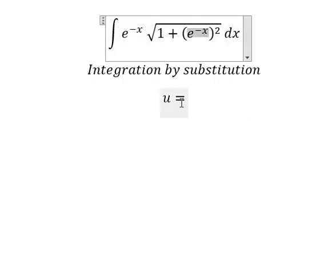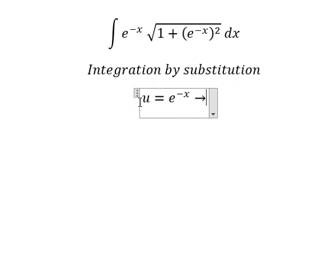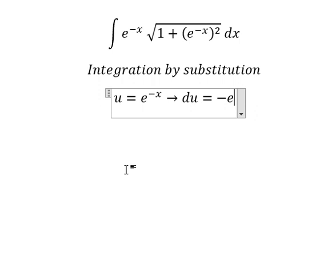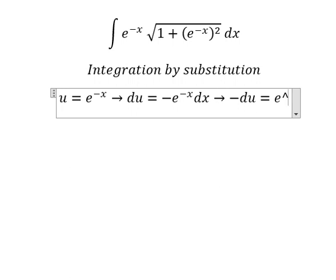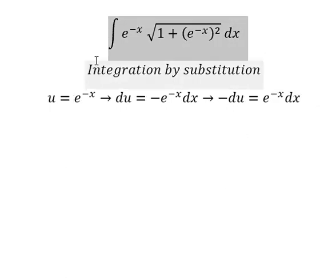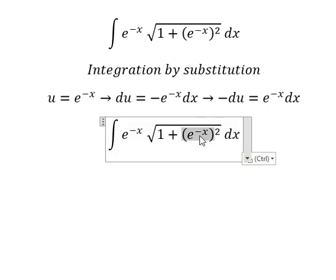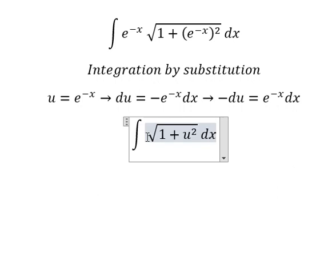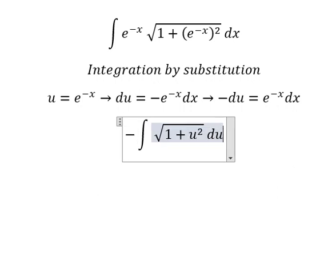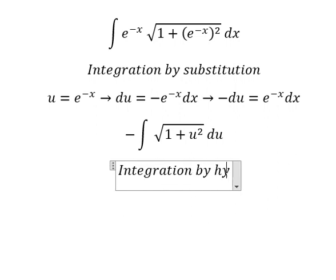...e to the power of s. Then we need to do the first derivative for both sides, and we get negative e to the power of negative s ds. Because we don't have the negative sign here, I will move this to the left. We change u for this expression and change ds for negative du. Next we can use integration by hyperbolic substitution.